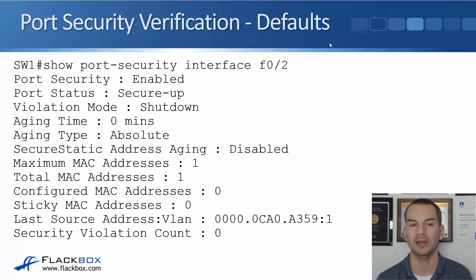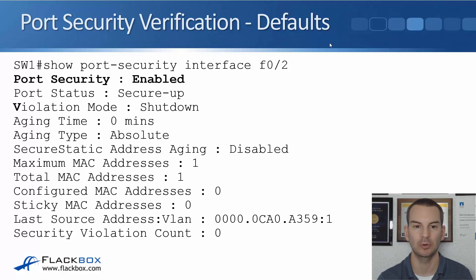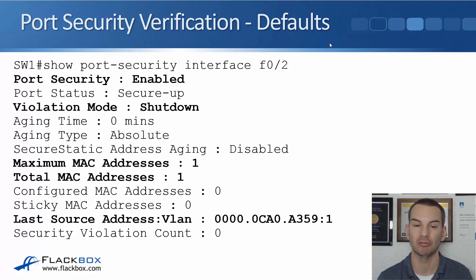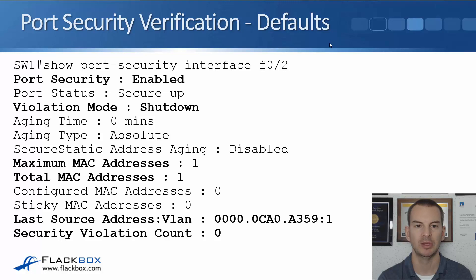To verify your port security settings, the command is show port-security and then the interface you want to check — here we're checking interface FastEthernet 0/2. I can see that port security has been enabled. The violation mode is shutdown, meaning if more than one MAC address transmits on this port it will shut the port down. The maximum MAC addresses allowed is 1 — that's the default — and total MAC addresses discovered right now is also 1. The current MAC address is ending A359, in VLAN 1. The security violation count is 0 because only one MAC address has tried to transmit, so the port status is secure — port security is enabled and it has not been shut down.